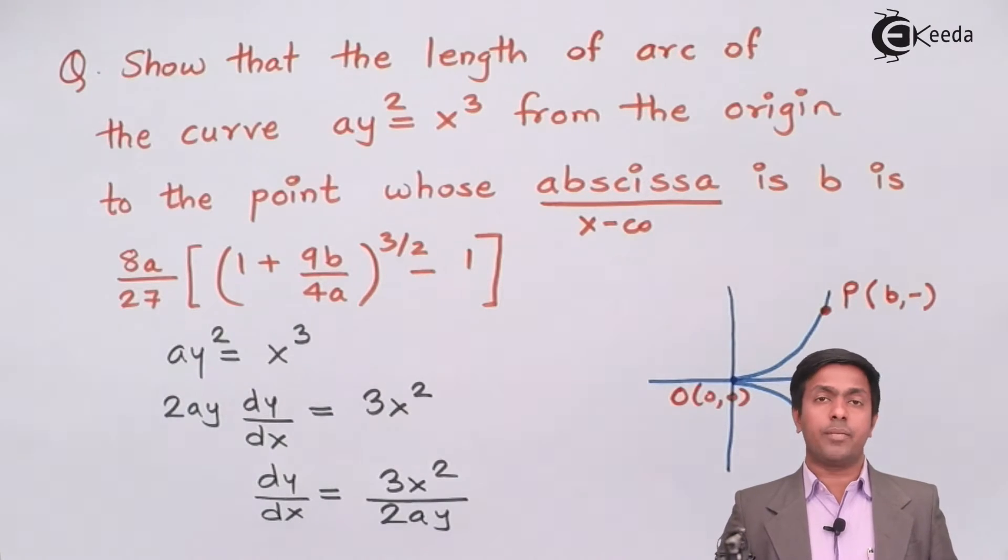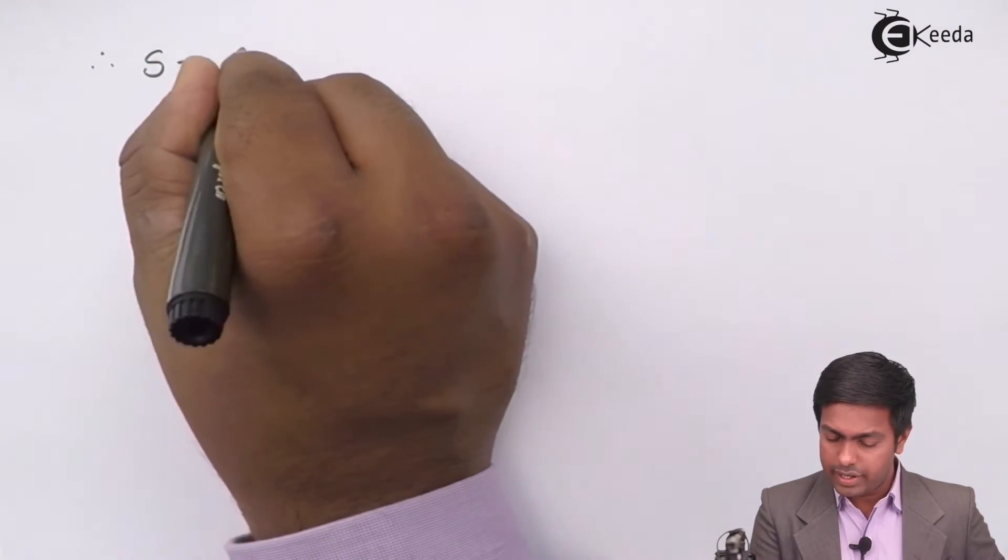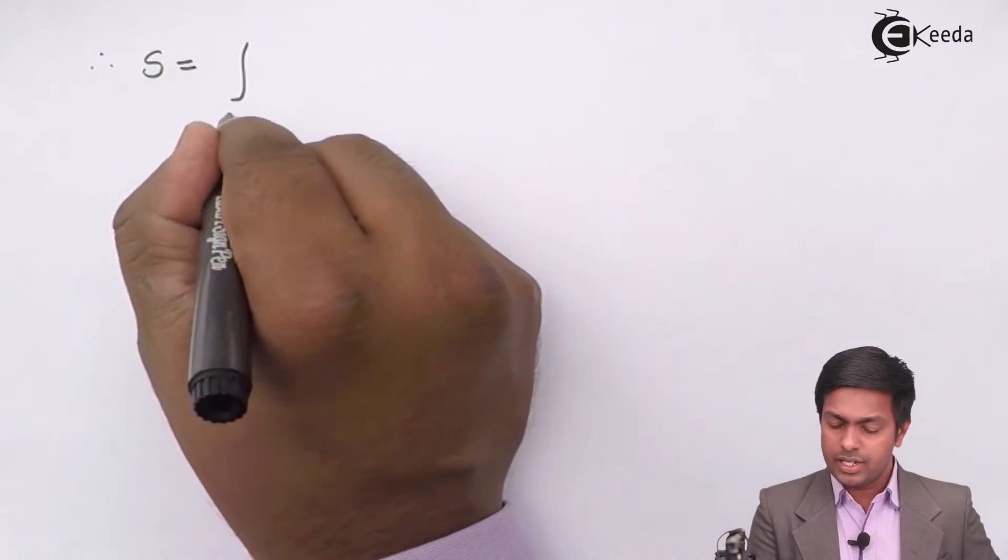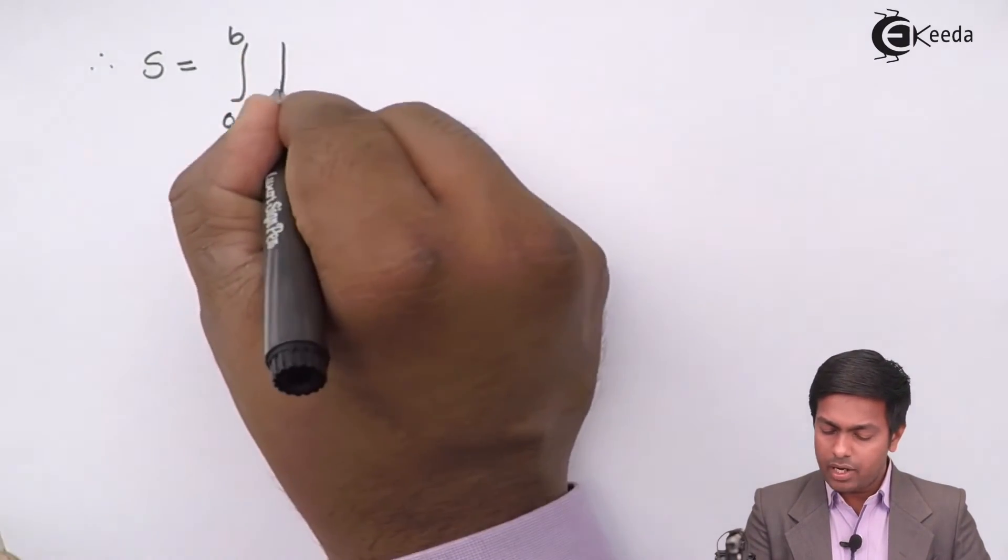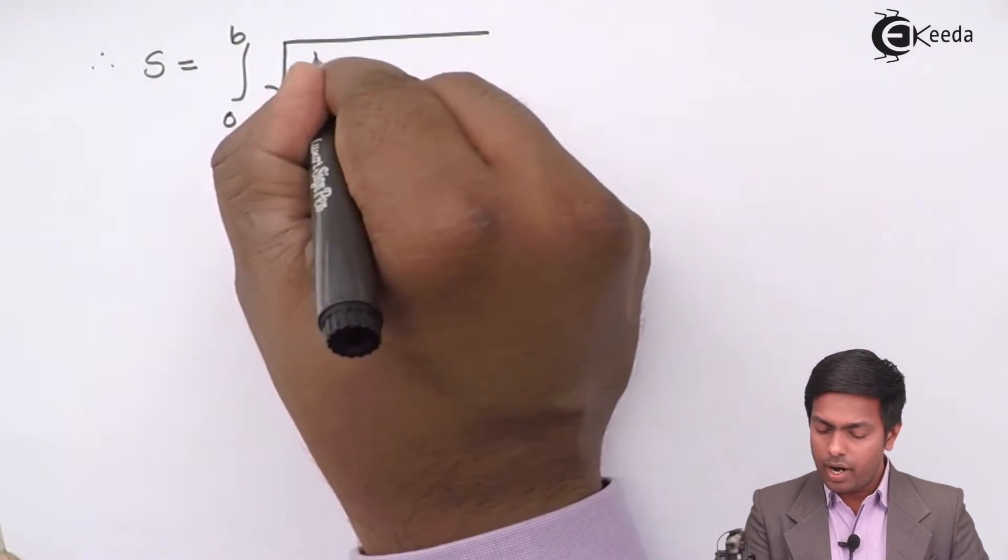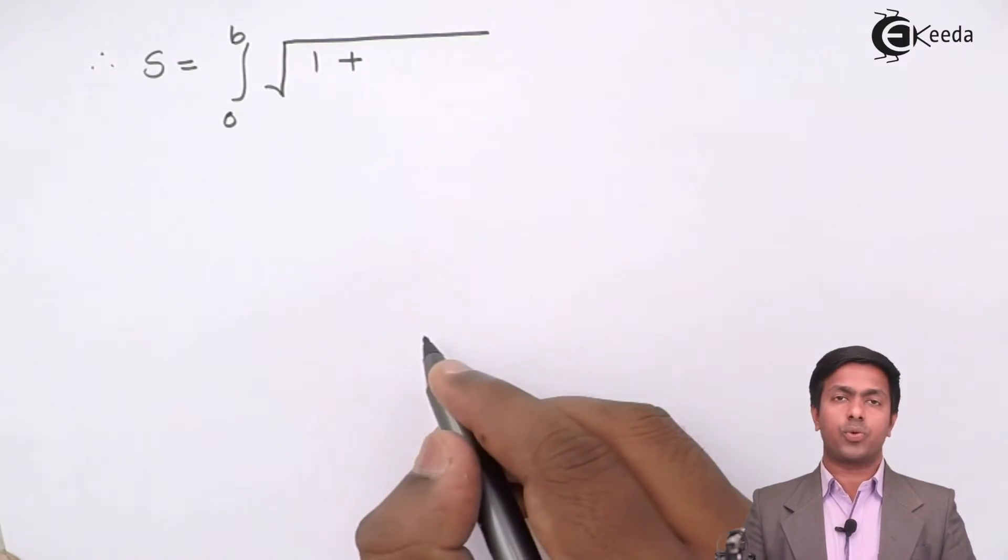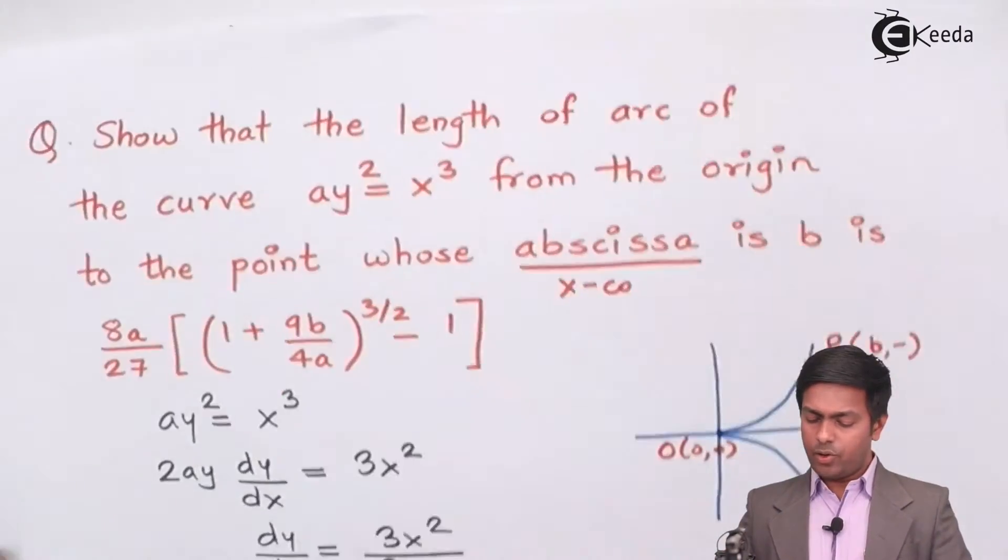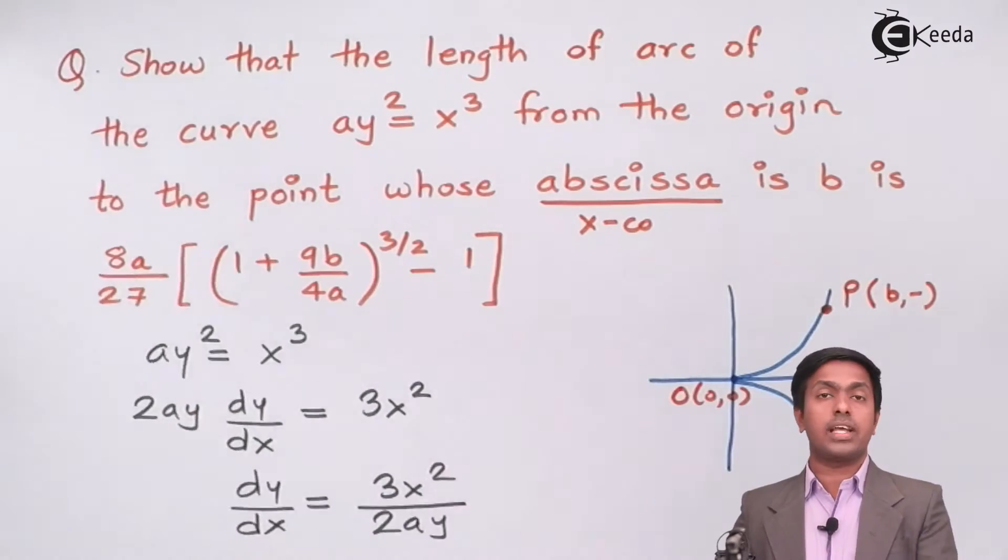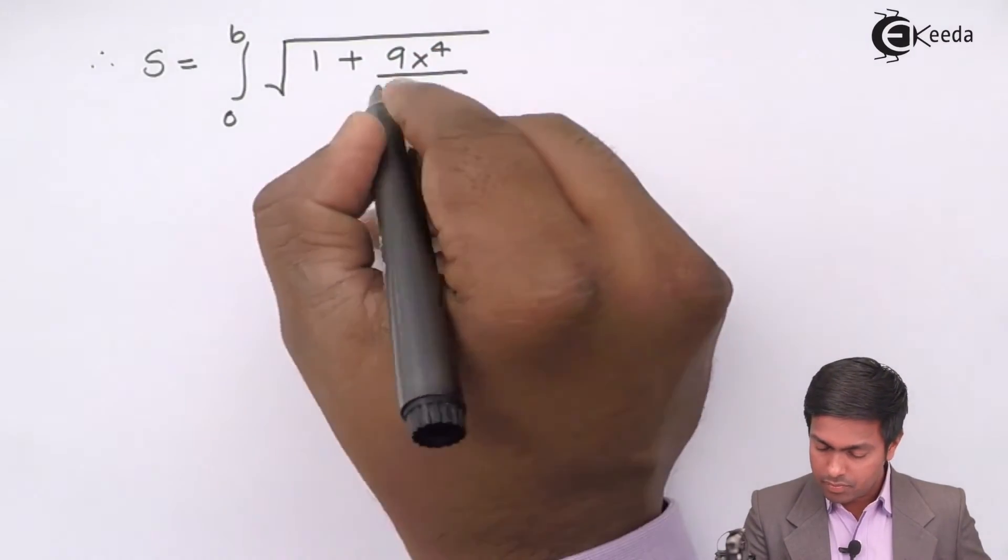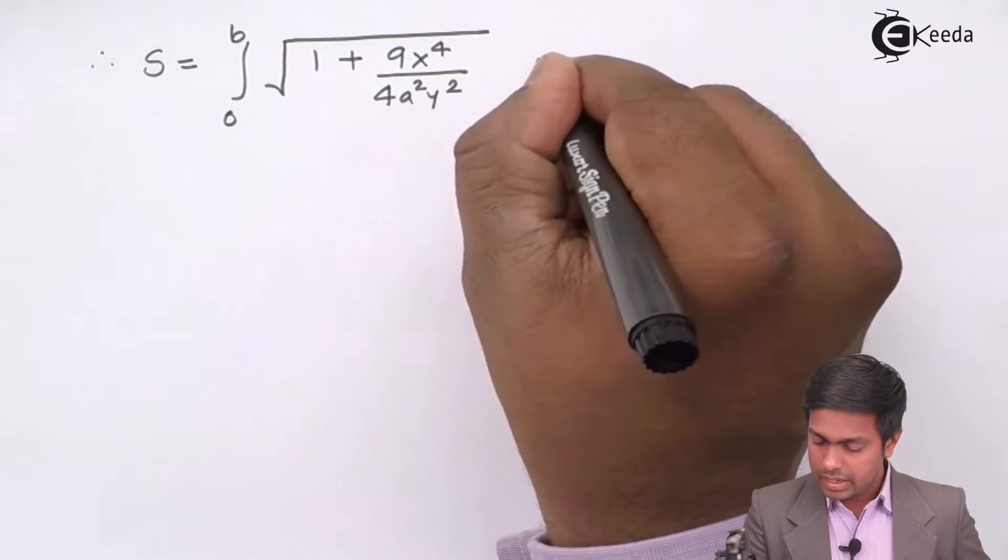So this is the value of dy by dx. Now we can use this value of dy by dx in the formula to find out length of curve. So here I will say therefore the length of curve which is s equal to integration x1 to x2 which is 0 to b is given by the formula under root 1 plus dy by dx the whole square. Now this is the value of dy by dx. Let's square it. So 9x raise to 4 upon 4 a square y square into dx.